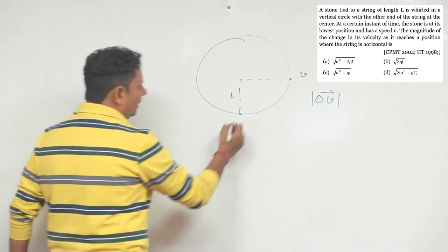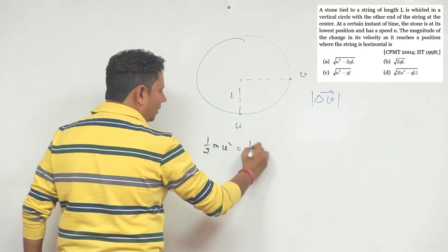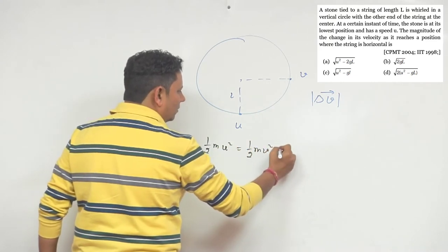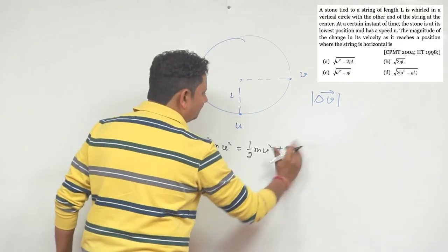So on this location, it is being zero. So in this location, one-half mU squared will be equal to one-half mV squared plus MgL.